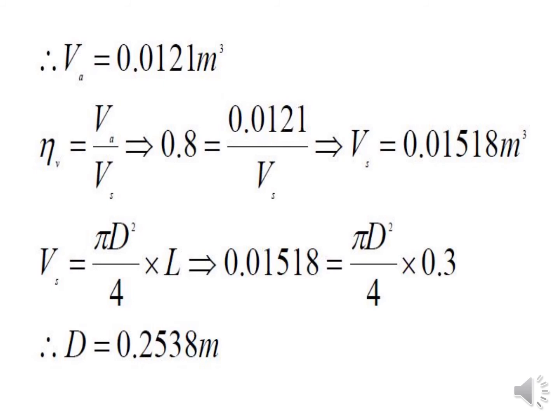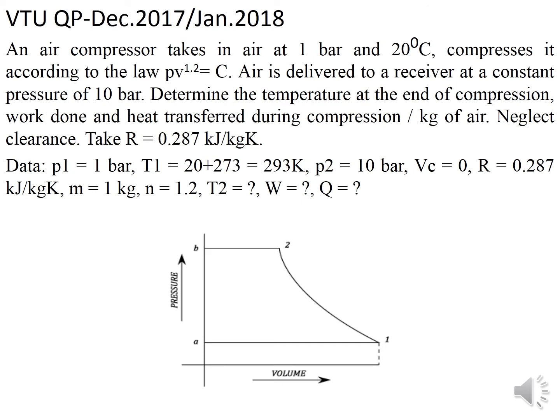This is a straightforward problem — just a few steps for 10 marks in the examination, so don't skip these easy problems. The next problem is from December 2017/January 2018: an air compressor takes in air at 1 bar and 20°C and compresses it according to the law PV^1.2. In this problem the index is 1.2, compared to 1.25 in the previous one.